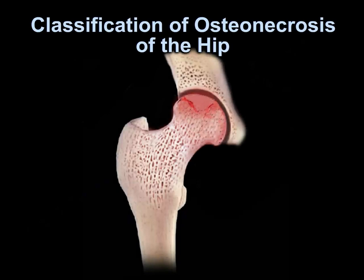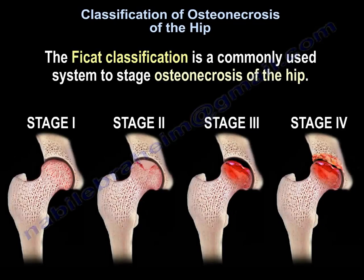Classification of osteonecrosis of the hip. The FICAT classification is a commonly used system to stage osteonecrosis of the hip. There are four stages.